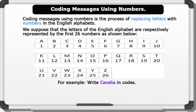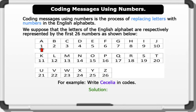Write 'Cecilia' encoded. Solution: replace each letter with the corresponding number. C is replaced with 3. E is replaced with 5. C is replaced with 3. E is replaced with 5. L is replaced with 12. I is replaced with 9. A is replaced with 1. Therefore, Cecilia equals 3, 5, 3, 5, 12, 9, 1. That's awesome.